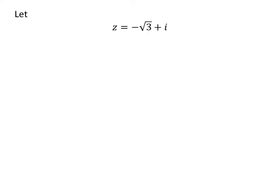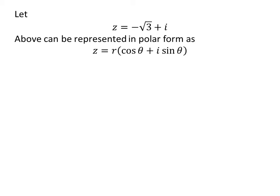Let us assume z be equal to minus square root of 3 plus i. The complex number z can be represented in polar form as r times cosine of theta plus i times sine of theta.